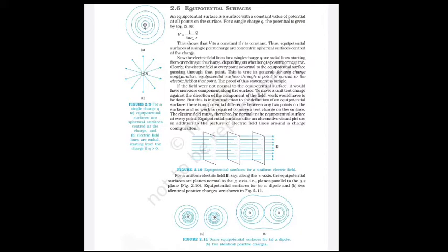Equipotential surfaces offer an alternative visual picture alongside electric field lines. For a uniform electric field E along the x-axis, the equipotential surfaces are planes normal to the x-axis — that is, planes parallel to the YZ-plane.